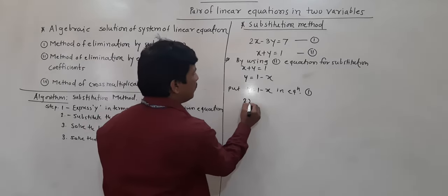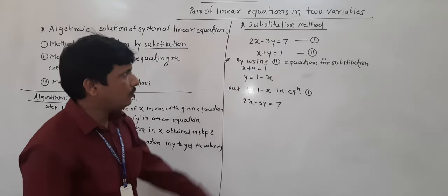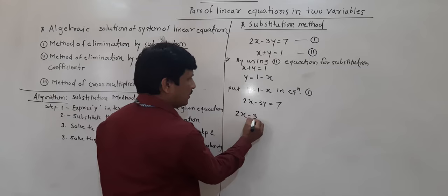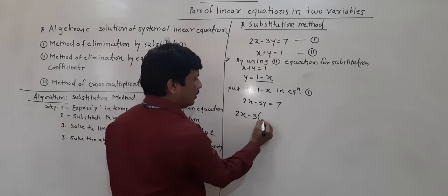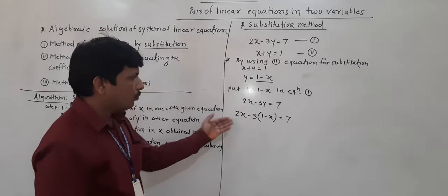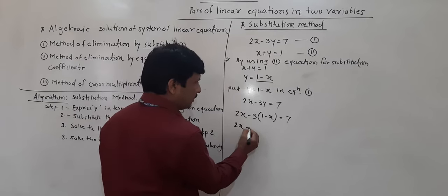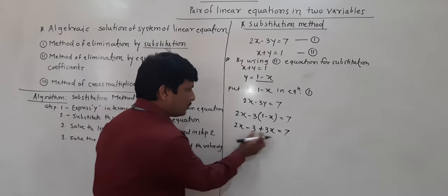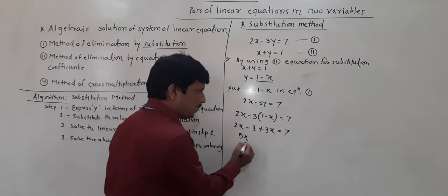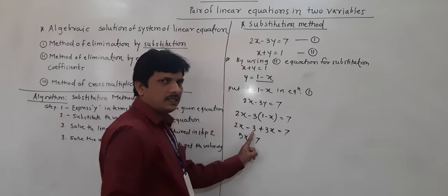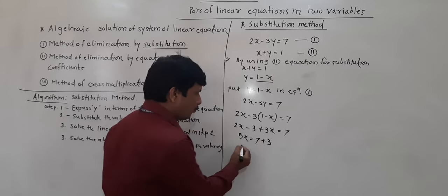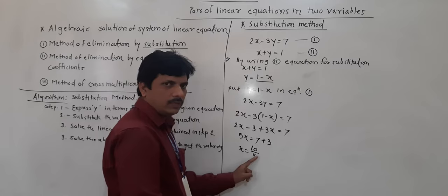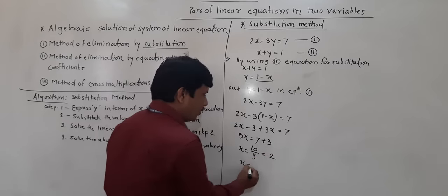What is equation 1? It is 2x minus 3y is equal to 7. So y is equal to 1 minus x. At the place of y we will put 1 minus x. So: 2x minus 3 times (1 minus x) is equal to 7. If you solve this: 2x minus 3 plus 3x is equal to 7. So 2x plus 3x gives 5x, and minus 3 moves to the other side as plus 3. So 5x equals 7 plus 3, which is 10. Therefore x equals 10 divided by 5, which is 2. We got the value of x is 2.